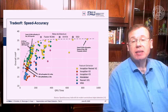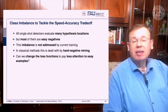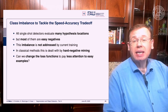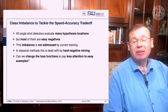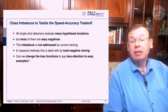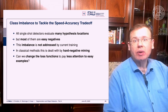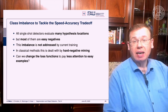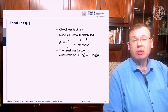Class imbalance is key to tackling the speed-accuracy tradeoff. All single-shot detectors evaluate many hypothesis locations, and most of them are really easy negatives. This imbalance is not addressed by current training. In classical methods, we dealt with this using hard negative mining. The question is: can we change the loss function to pay less attention to easy examples? This idea brings us to the focal loss.